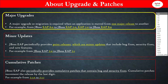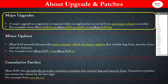Let us begin with upgrades and patches. The first type is the major upgrade, which is when you upgrade from one major version of JBoss to the next — for example, 5.0, 6.0, 7.0, and 8.0 are major versions. So upgrading from 5 to 6, 6 to 7, or 7 to 8 are all called major upgrades.